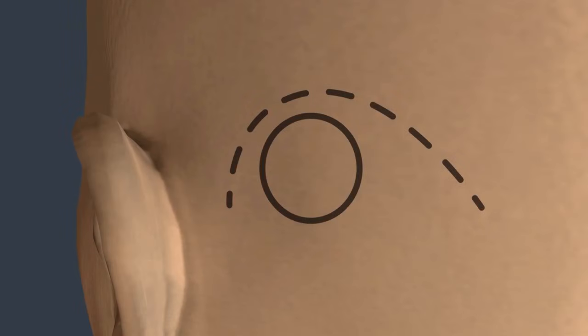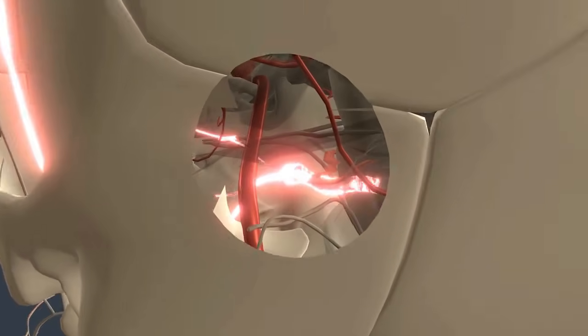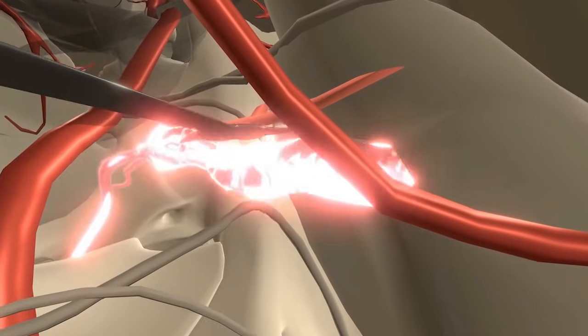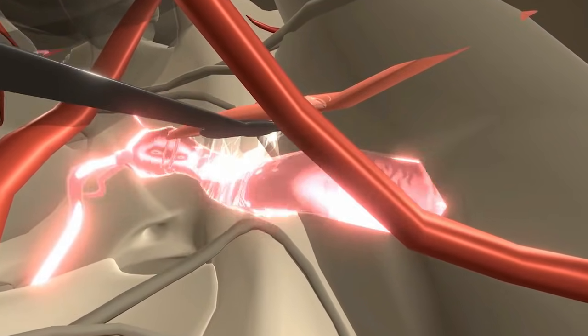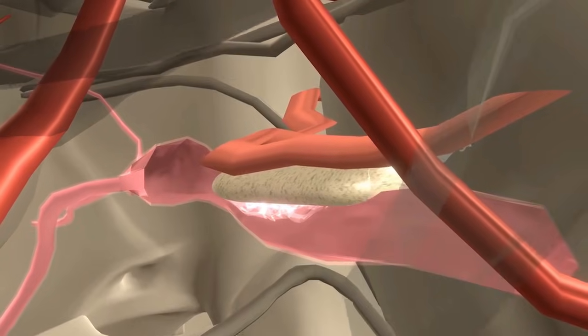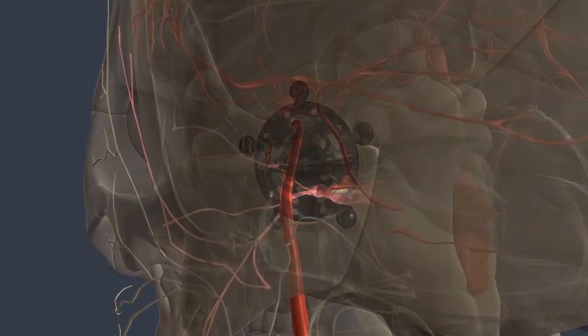In an operation called microvascular decompression, surgeons create an opening just behind the ear and use a microscope to locate the trigeminal nerve near its origin on the brainstem. The offending blood vessel is moved away from the nerve, and a small Teflon sponge is placed between these two structures. In most instances, this procedure results in substantial pain reduction or even cure.